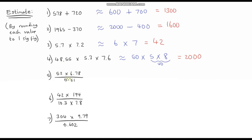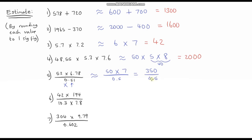This next one — be really careful with the denominator. So this is approximately equal to 52 rounded down to 50, and 6.78 rounded up to 7. In the denominator you may be tempted to round up to 1, but that would not be correct. Remember any leading zeros are not counted as significant — the 5 is our first significant figure, so we look to the right of the 5, which is 1, so this rounds down to 0.5. So we have 50 times 7 equals 350, divided by 0.5. Dividing by a half is the same as multiplying by 2, so 350 times 2 is 700.